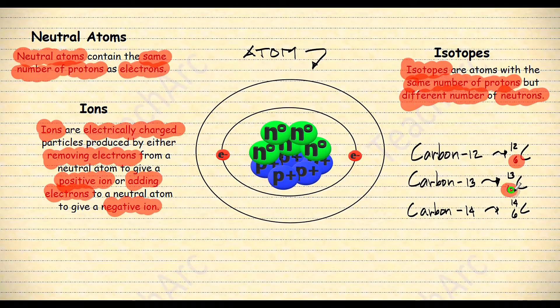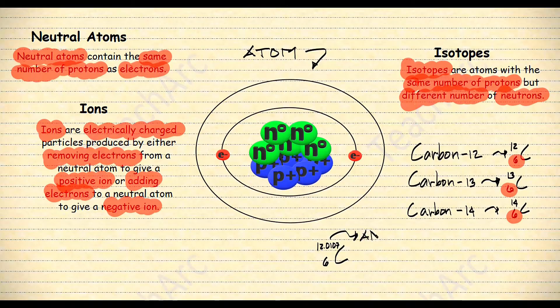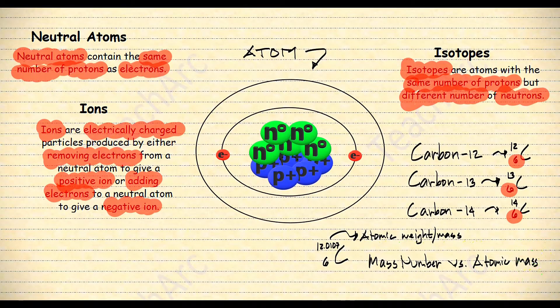Same number of protons but different number of neutrons. You might be wondering when you look at your periodic table of elements because the number written for carbon has decimal places there. That is not the mass number but the atomic mass or the atomic weight. If you want to know the differences between mass number and atomic mass, then check the link below for the video.